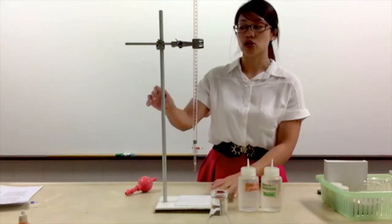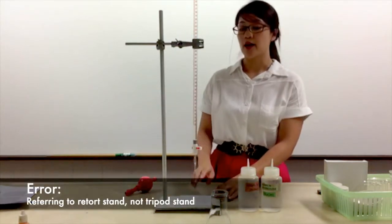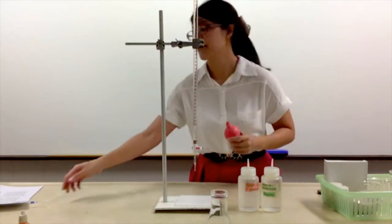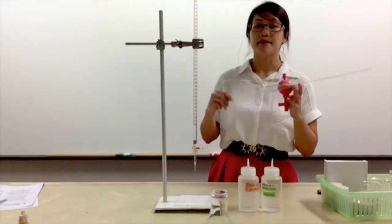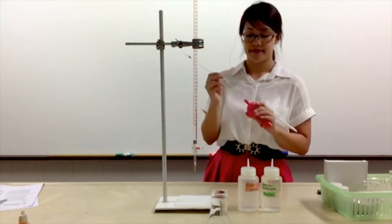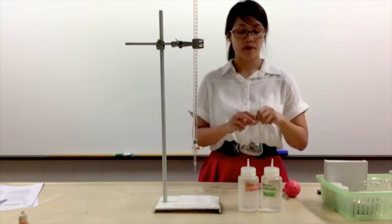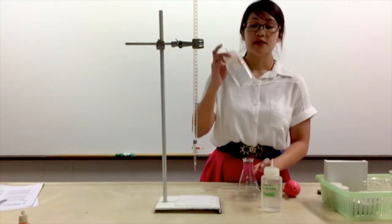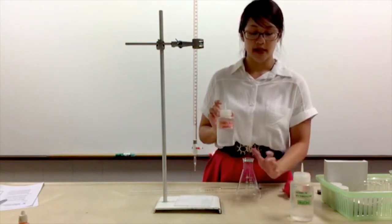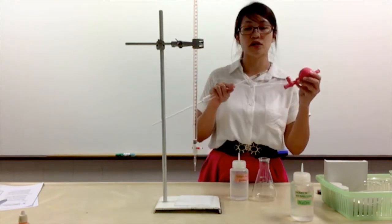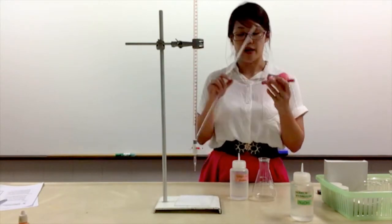What else do we need? We will need to set up the burette using the tripod stand, and we also need a pipette filler and a pipette. So firstly we need to place sulfuric acid into your conical flask. This is a pipette filler and you will have to use the pipette filler together with the pipette.